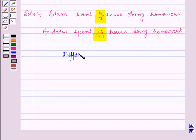The difference in hours is equal to 16 by 21 minus 4 by 7.